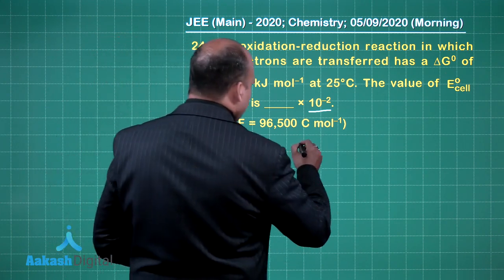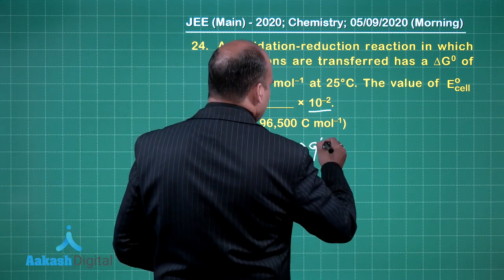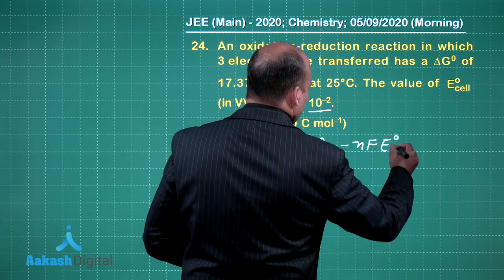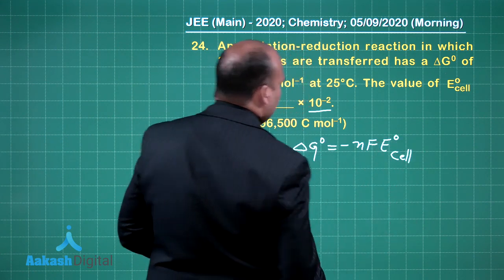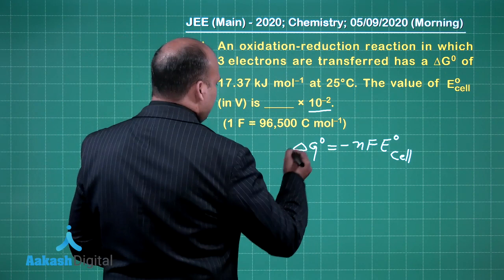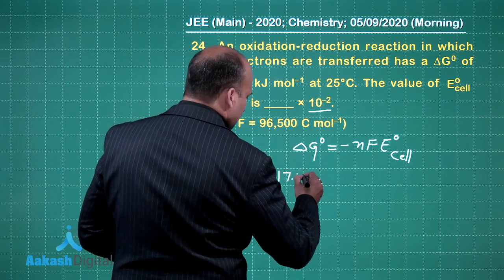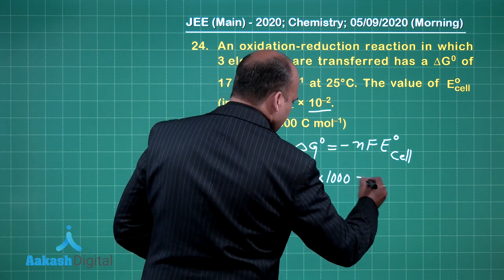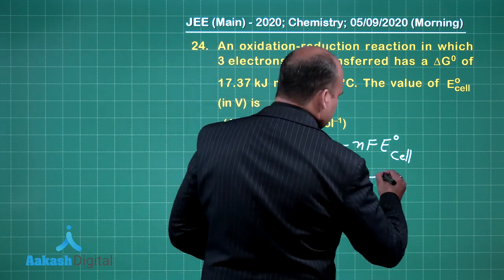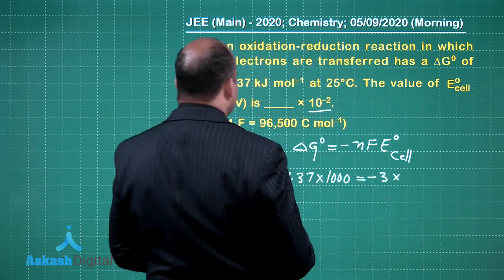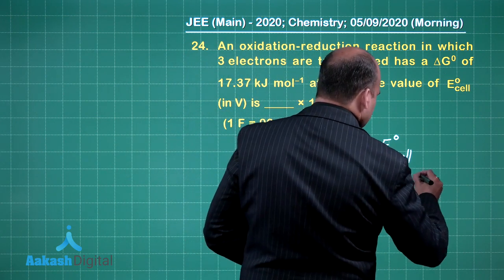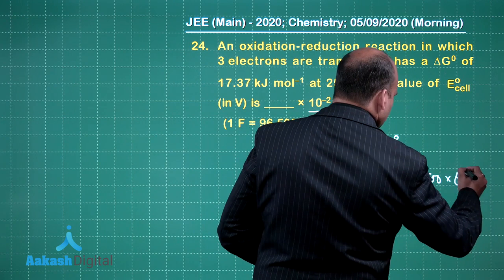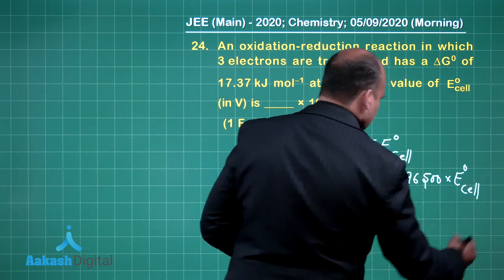What is the formula? ΔG° equals minus nFE°cell. What is the value of ΔG°? 17.37 kilojoules, so this is 17.37 times 1000. Number of electrons is 3. Faraday's constant is given to be 96500 times E°cell.